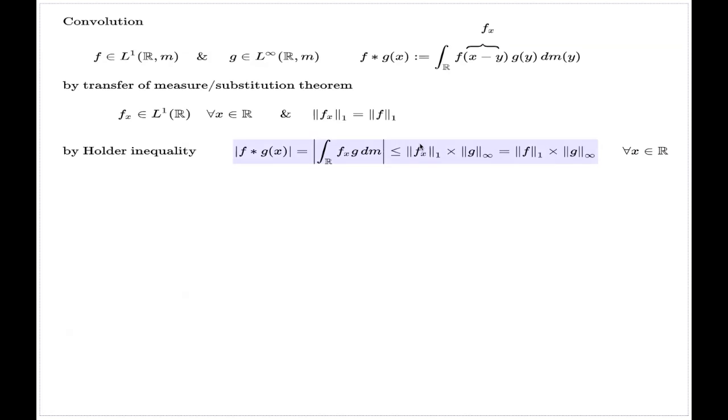So we see by Hölder inequality and the transfer of measure and substitution theory, we conclude that the convolution, defined like this, is in fact a bounded function, and you can control the bound of this function by the right-hand side like this.